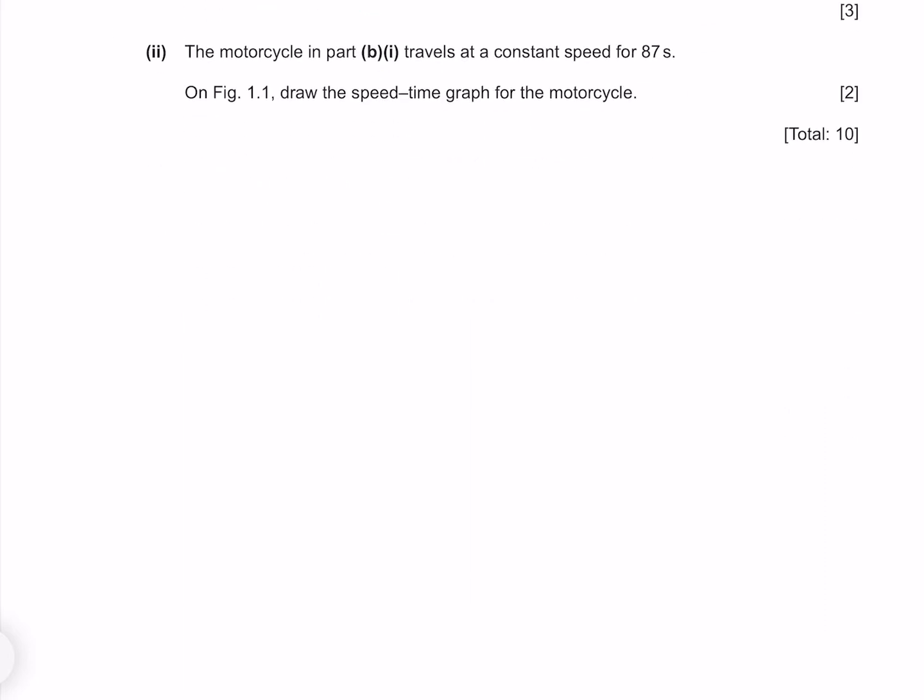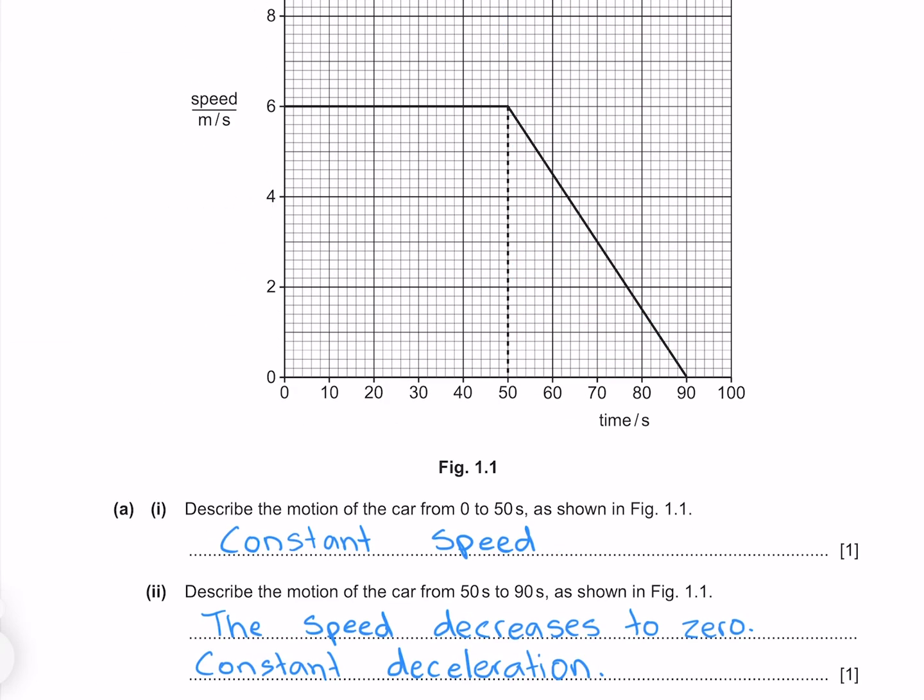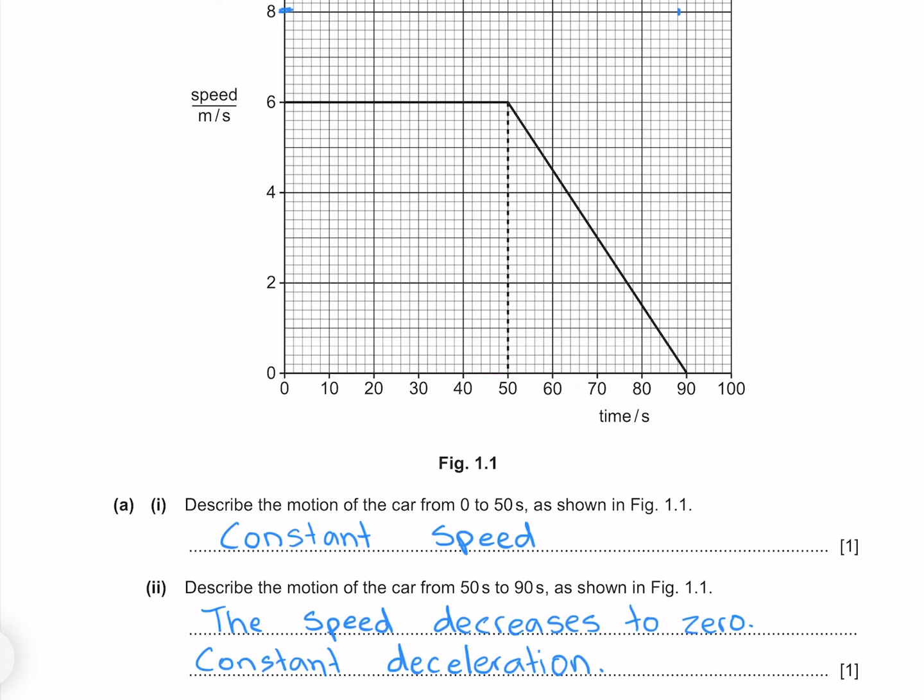The motorcycle in part BI travels at a constant speed for 87 seconds. On figure 1.1, draw the speed time graph for the motorcycle. So we have a speed of 8 metres per second for 87 seconds. Which means our line is going to stay at 8 metres per second and is going to end at 87 seconds, which is roughly here.